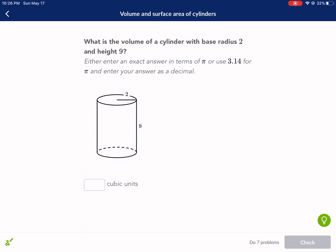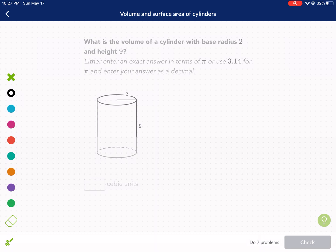Let's go ahead and start with this first question: What is the volume of a cylinder with base radius 2 and height 9? One thing we need to understand about the formula for volume is that it is the area of the base times the height.